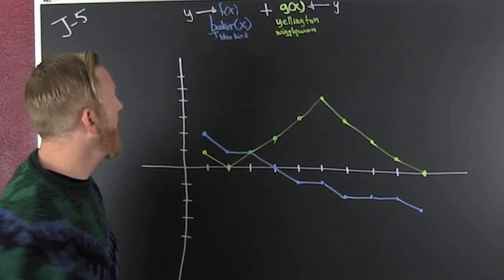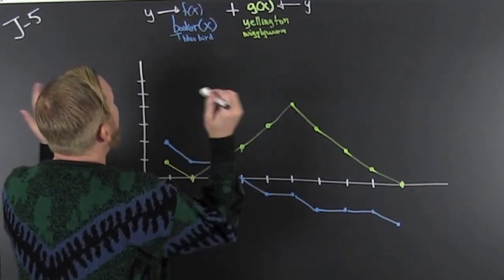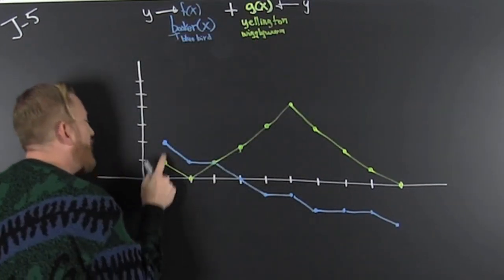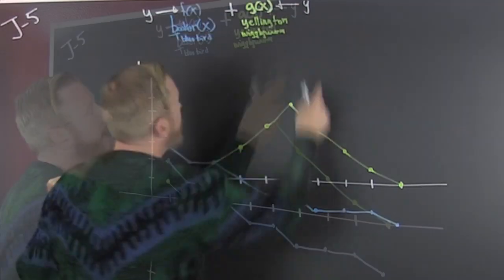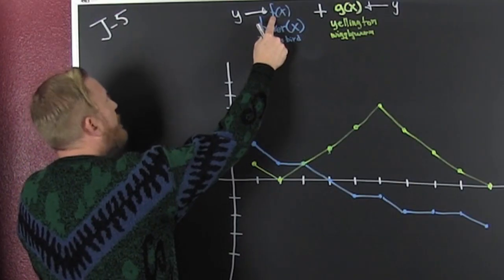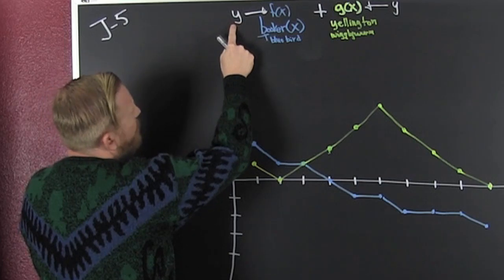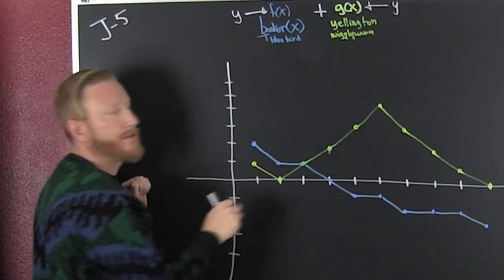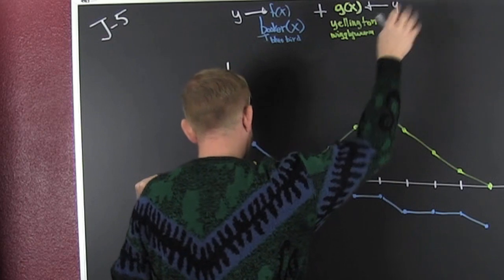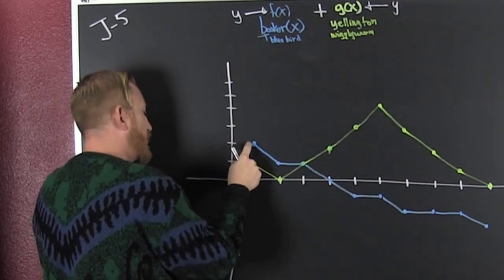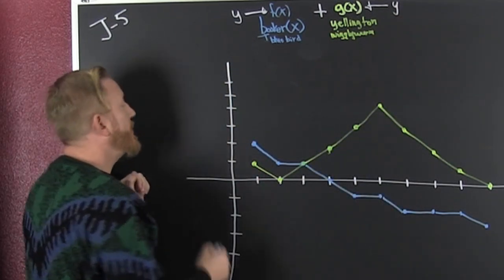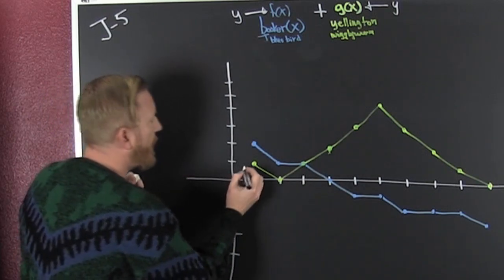What am I trying to do? I'm trying to add functions, and when I'm adding functions, I'm adding their y-value. Because f of x is the function formerly known as y. Also, g of x is also y. So in this function notation, when I'm adding those, the notation suggests I add their y.